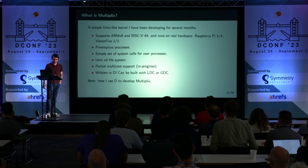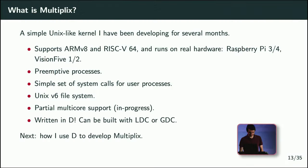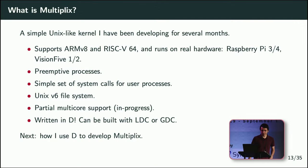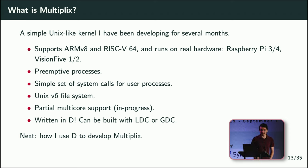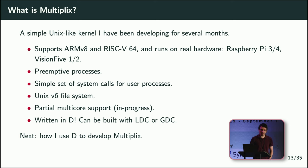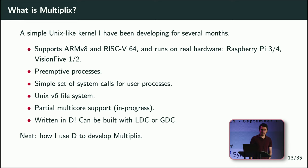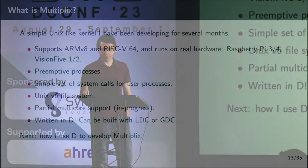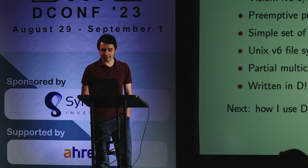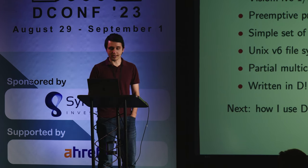Moving into the second part: Multiplex in particular. It's a small Unix-like kernel. It has process creation, a simple set of system calls, a simple Unix V6-style file system, and some partial multi-core support — it can boot up all cores, and I'm still working on getting multi-core working better. It can be built with LDC or GDC. I'll now talk about my experience using D for kernel development.